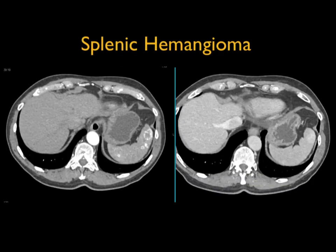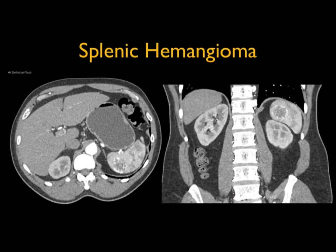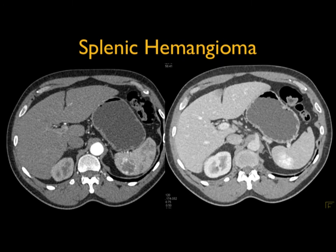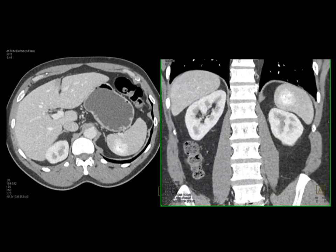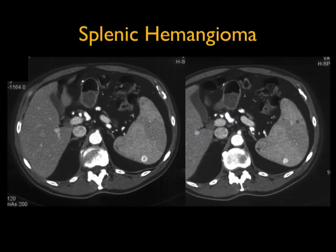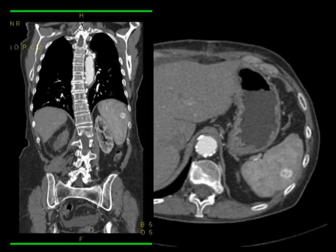Here are a couple of examples. Here's a very nice set of hemangiomas with peripheral enhancement, and you can see they're essentially gone by the venous phase. Another example shows a dominant hemangioma which over time fills in very nicely. Or in this example, again prominent enhancement in the splenic lesion which filled in over time. When you think about splenic hemangiomas, this round circular lesion is a very good appearance — that donut appearance we also talk about in hepatic hemangiomas.